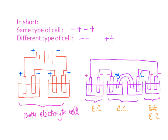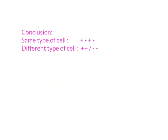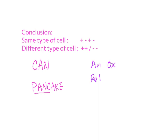In conclusion, same type of cell will be positive, negative, positive alternating. For different types of cells, positive points to positive and negative points to negative. Most importantly, remember CAN and PANCAKE. And one universal truth: AN OX, RED CAT — no matter whether you are in a chemical cell or electrolytic cell, if you have oxidation, that must be the anode; if you have reduction, that must be the cathode. That's all for this video.